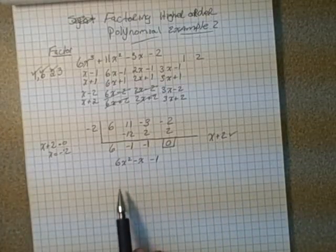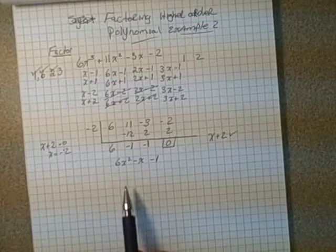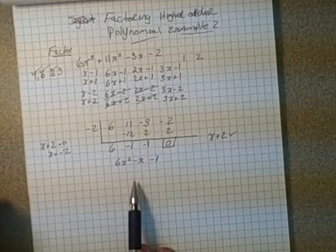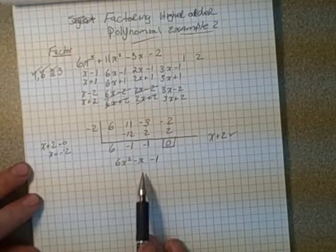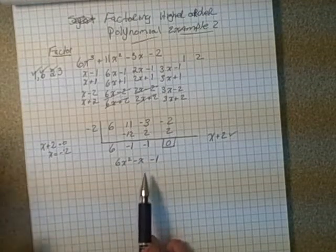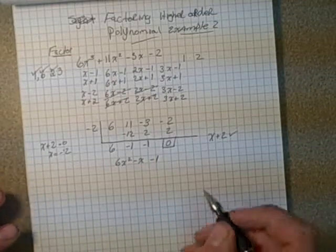We know that the other factor is 6X squared minus X minus 1. We could use synthetic division here, but if we choose to do decomposition from grade 10 math, you've done some decomposition. I'm going to use decomposition this time because last time I kept going with synthetic division.